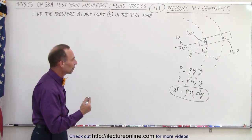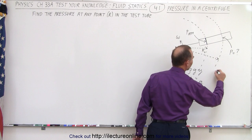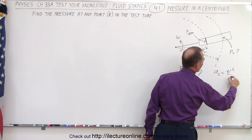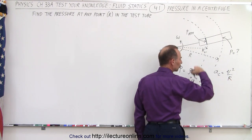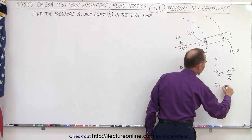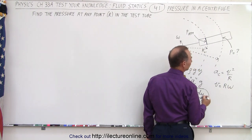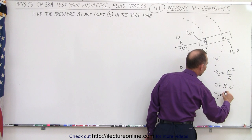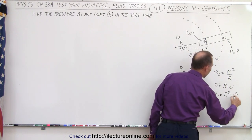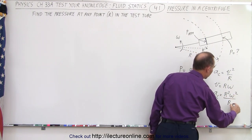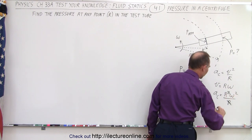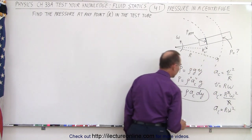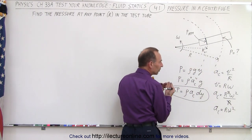First, let's calculate the centripetal acceleration. We know that centripetal acceleration is equal to v squared over r. When we go around in a circle, v is equal to r times omega. So when we substitute, the centripetal acceleration is equal to r squared omega squared divided by r. One of the r's cancels out, so the centripetal acceleration is equal to r times omega squared. Note that r and y are in the same direction.